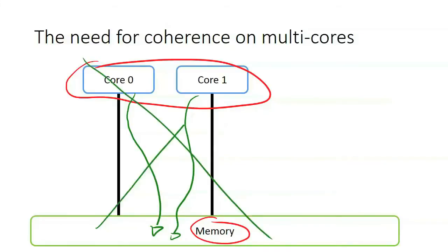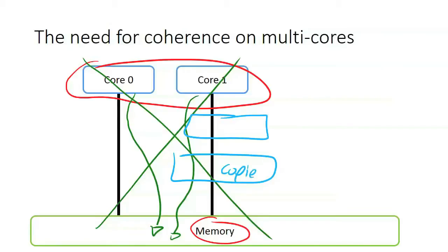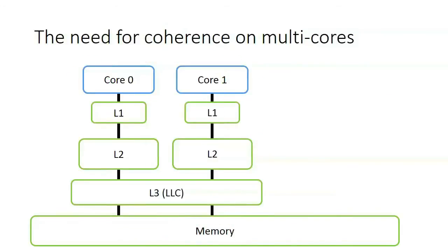However this is not a realistic model of a CPU because modern processors do not only contain the main memory but also contain several levels of CPU caches. A cache is a smaller but faster memory that contains copies of the data that are frequently accessed from the main memory. So this is a more realistic model of a modern multi-core processor.